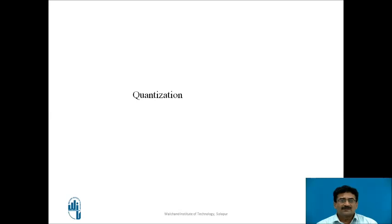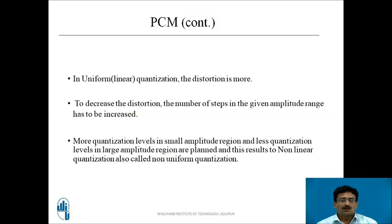Quantization is broadly of two types: linear quantization, also known as uniform quantization, and non-linear quantization, also known as non-uniform quantization. To decrease distortion, the number of step levels must be increased. More quantization levels in small amplitude regions and fewer in large amplitude regions corresponds to non-linear quantization.